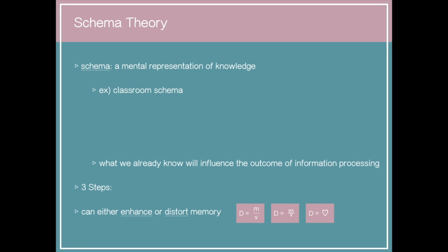What is a schema? A schema is a mental representation of knowledge. For example, if we hear the word 'classroom,' there may be various arrangements, such as students individually aligned in rows and columns, students in groups, a homeschooler with a tutor and student, or a circular arrangement for class discussions.